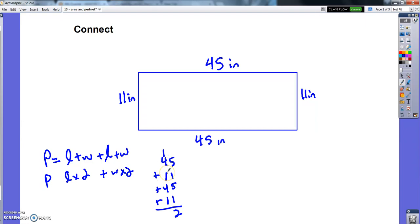So I would do 45 plus 11 plus 45 plus 11 and get a perimeter of 112 inches perimeter.